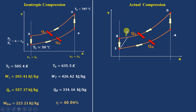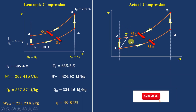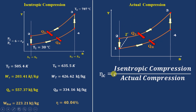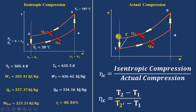Whereas in actual compression, we consider the irreversibility of the system, so there will be a temperature rise and entropy will never be constant. This irreversibility is due to internal friction between air molecules or friction between air and the compressor wall. The isentropic efficiency of the compressor is defined as the ratio of isentropic compression work to actual compression work: η_c = (T2 − T1) / (T2' − T1). T2 can be found using the isentropic relation: T2/T1 = (P2/P1)^((γ−1)/γ).